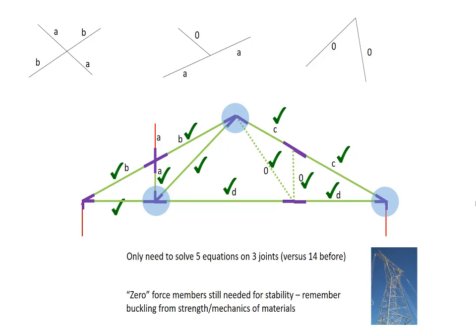So with that, we finish this example. The main takeaway here is that we have these three diagrams at the top of the screen. Your task is to go through a truss, look at the joint configurations, see if those joint configurations match the diagrams at the top of the screen, and if they do, apply the known results. That will greatly simplify your equilibrium calculations.